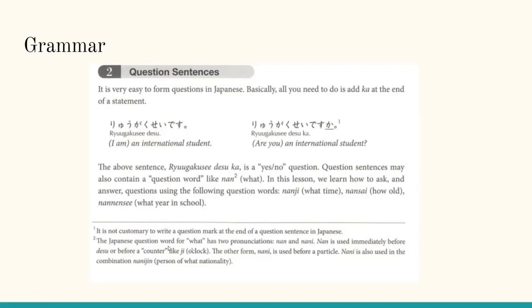Note two: The Japanese question word for what has two pronunciations, nan and nani. Nan is used immediately before desu or before a counter, like ji, which means a clock. The other form, nani, is used before a particle. Nani is also used in the combination nanijin, which means person of what nationality.